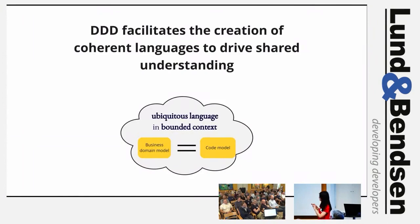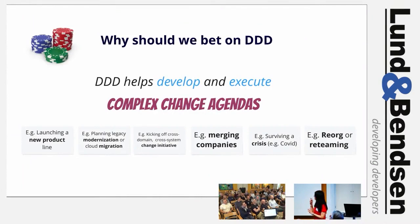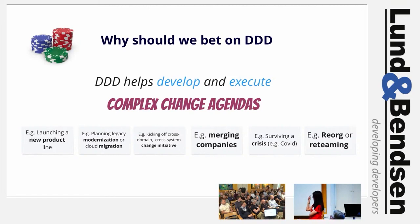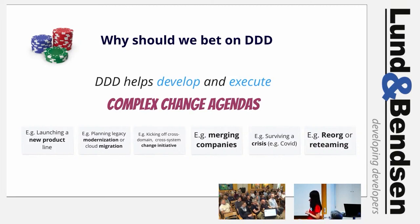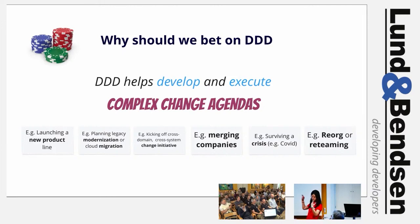In my view, DDD can really help develop and execute complex change agendas — launching a product line, modernization, cloud migration, merging companies where you have similar product domains but different meanings and implementations, and surviving a crisis like COVID. I've seen a lot of DDD being used to repurpose existing capabilities — like having a physical shop and suddenly needing to go digital, or reteaming using Conway's Law and reverse Conway's maneuver.